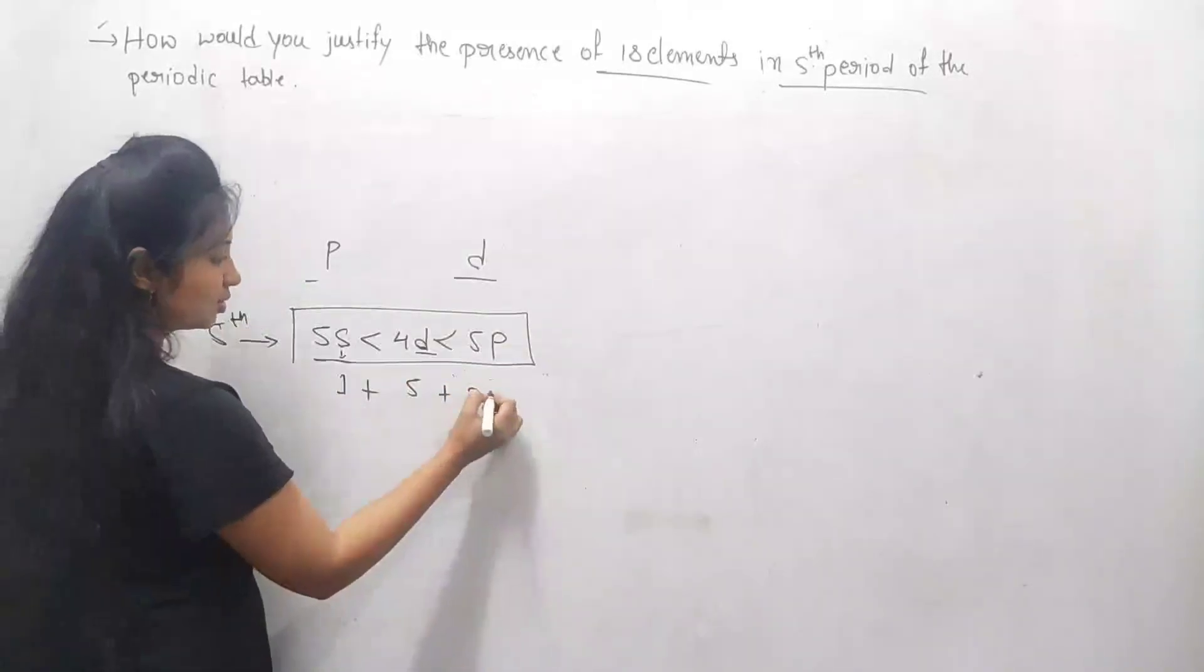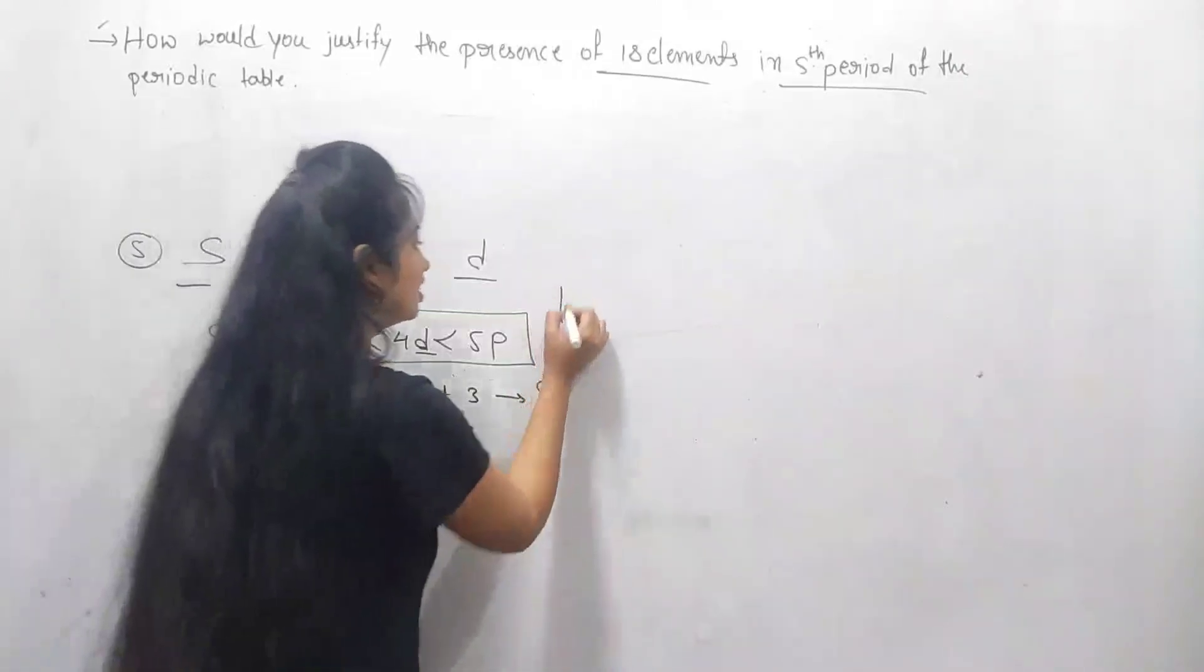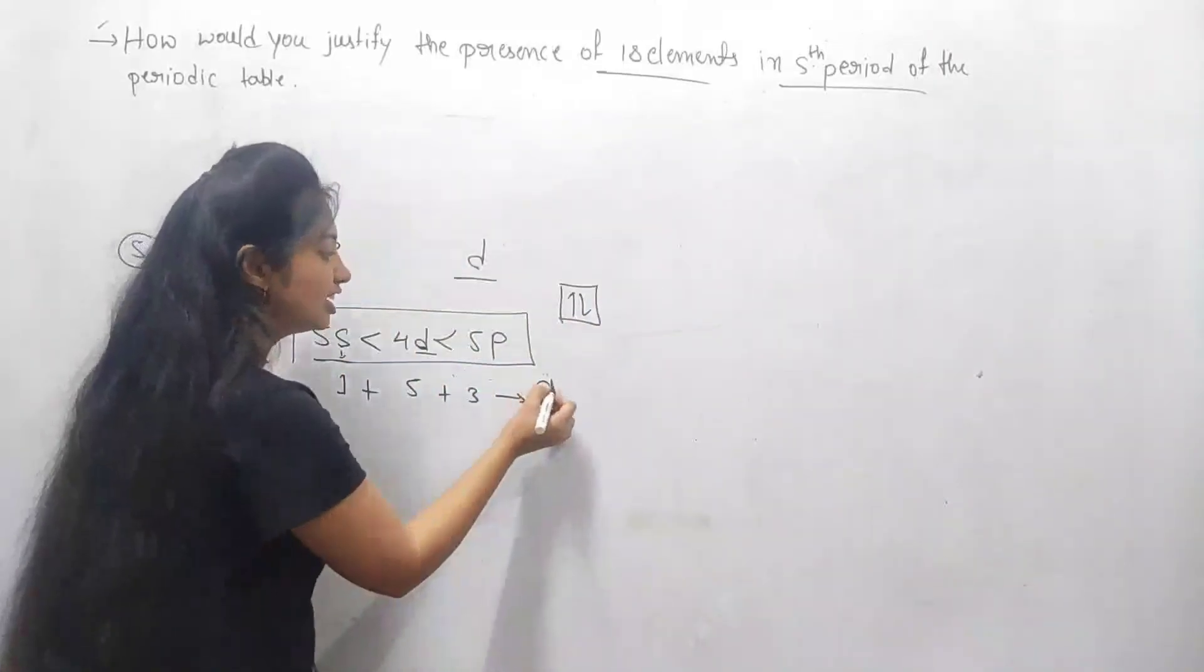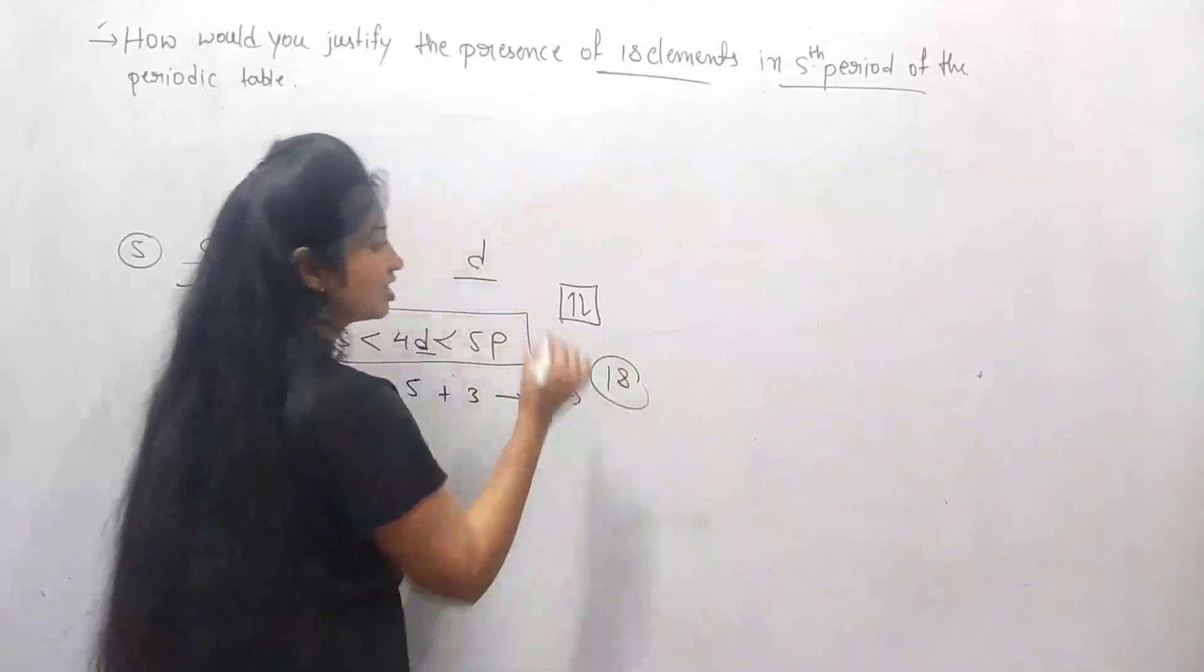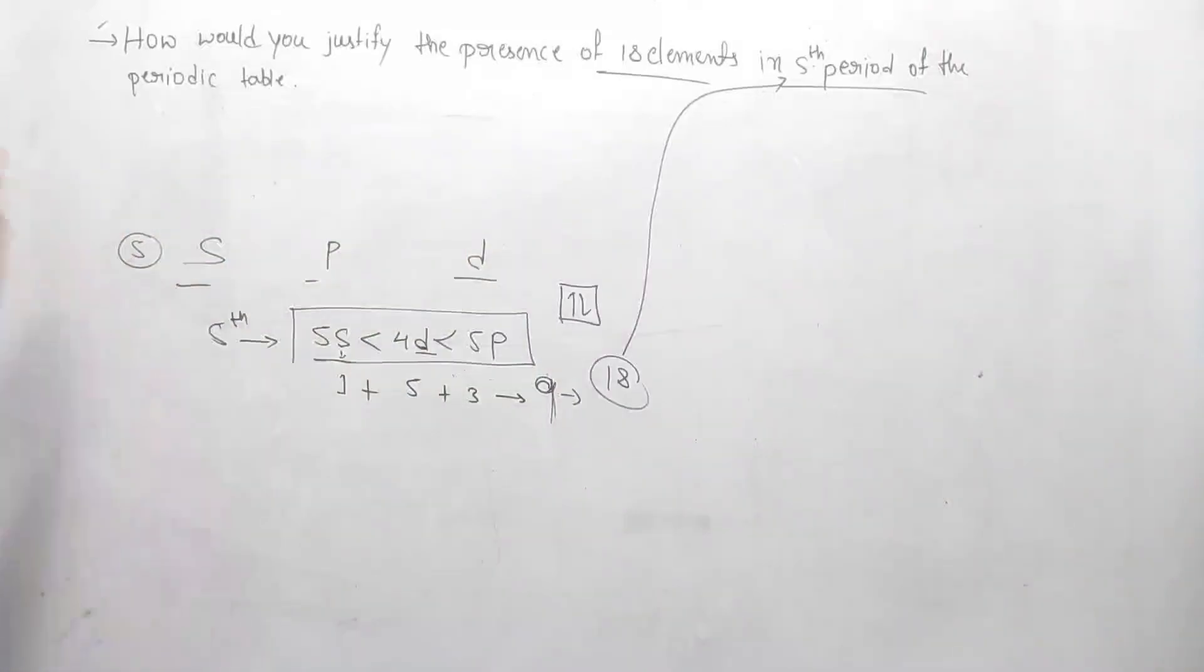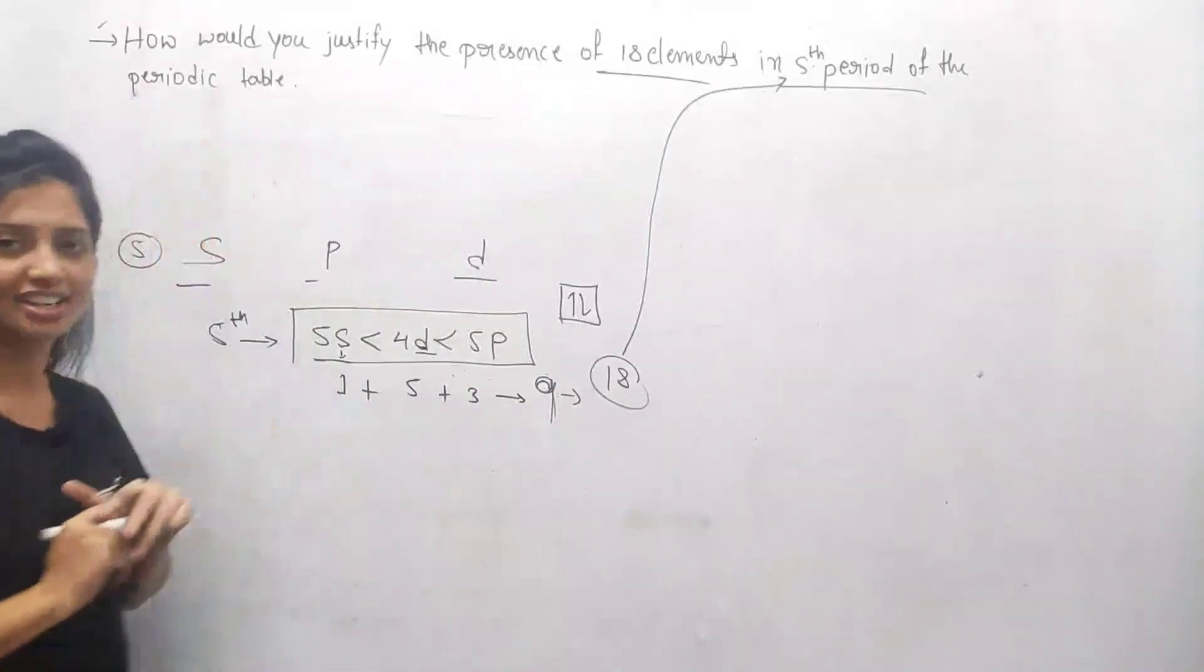So totally we have nine orbitals. In one orbital we fill maximum two electrons, so in our nine orbitals we fill maximum 18 electrons. So 18 elements are present in the fifth period of the periodic table. This is the answer for this question.